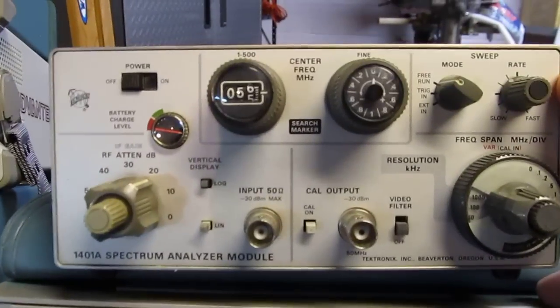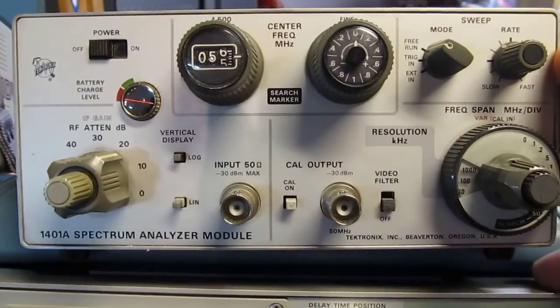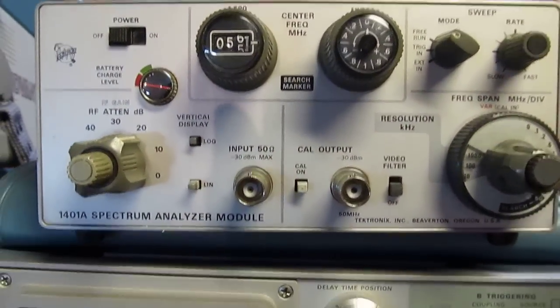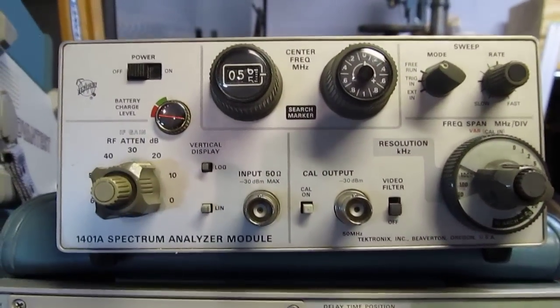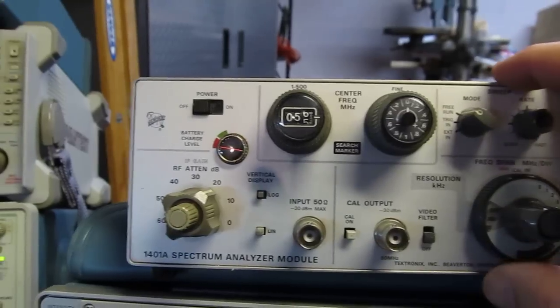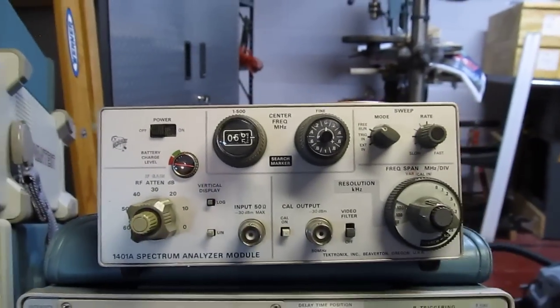This is a Tektronix 1401A spectrum analyzer module. Basically converts any scope that can do XY into a spectrum analyzer. Not a bad little unit. I picked that up at a ham fest and had to repair that as well.